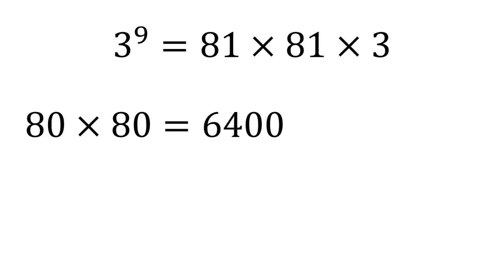If we start with 80 times 80, this is a nice easy one. 8 times 80 is 64. There are two zeros, one each in the 80s. So we put them on the end of the 64 to give us 6400.